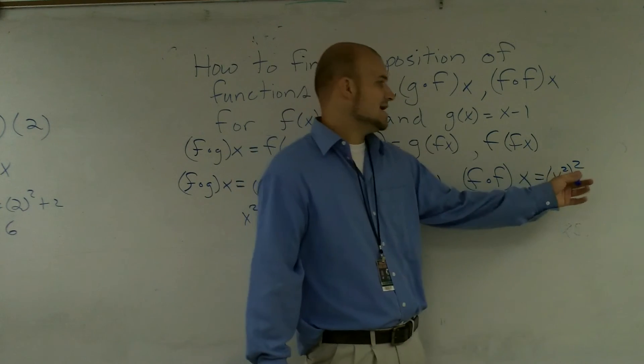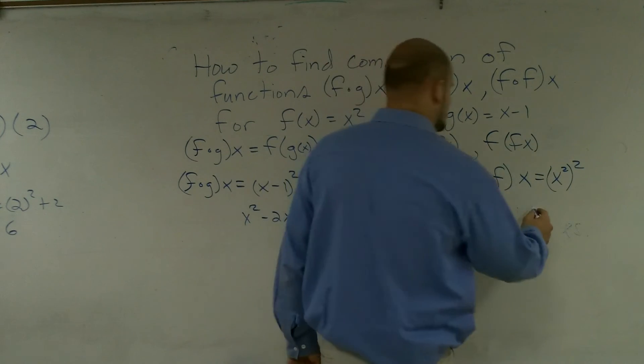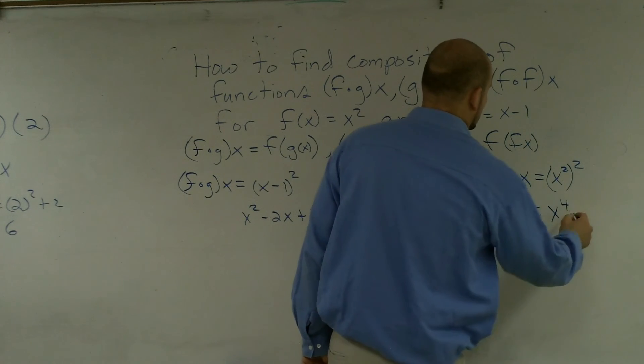And then, remember when you have an exponent to an exponent, you're going to multiply your exponents, so your final solution will be x to the fourth.